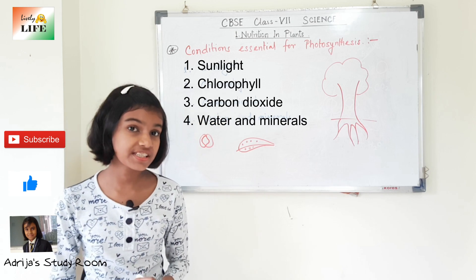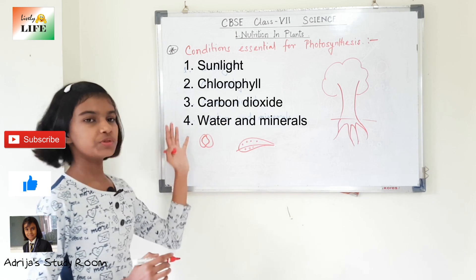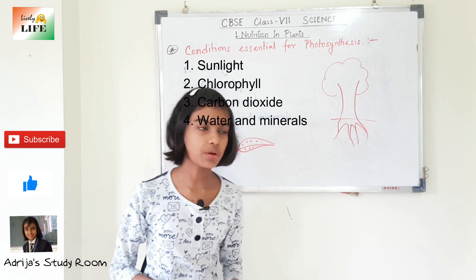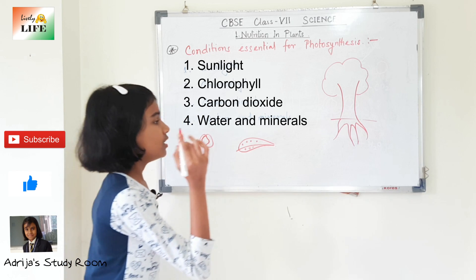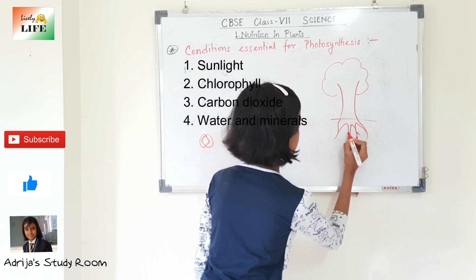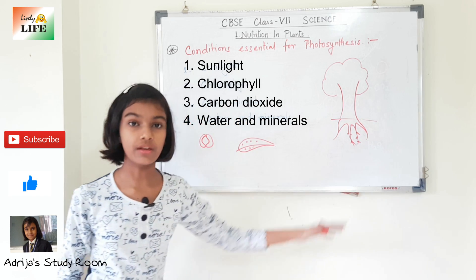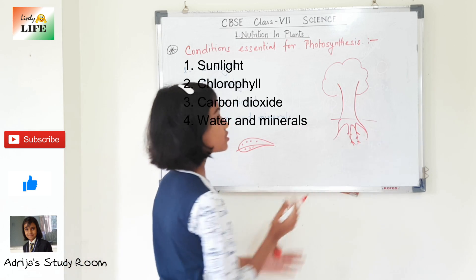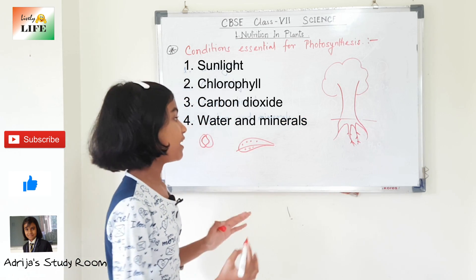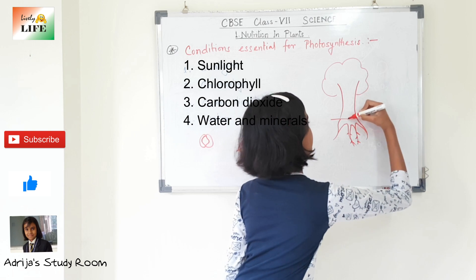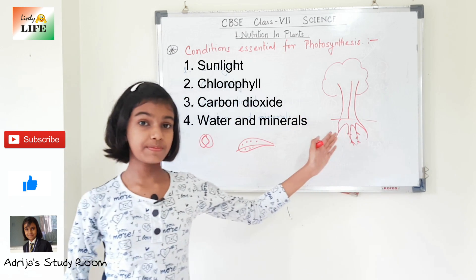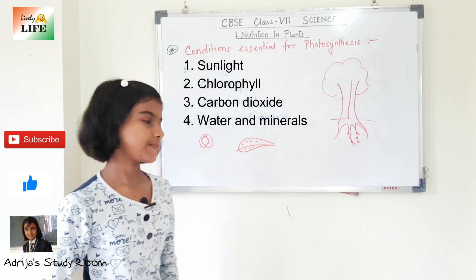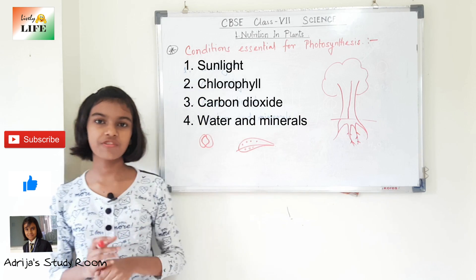Water and minerals are also essential for photosynthesis. The roots absorb water and minerals from the soil. The roots have hair-like structures known as root hair that help in absorbing water and minerals. The water is transported to the leaves by a tissue called xylem, which helps in the transportation of water from the roots to the leaves for photosynthesis.